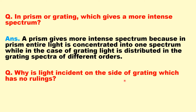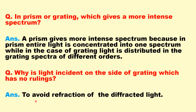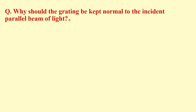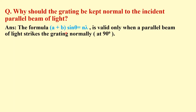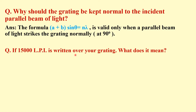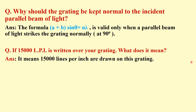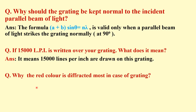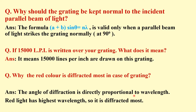Why is light incident on the side of the grating that has no ruling? It is to avoid refraction of the diffracted light. Why is the grating kept normal to the incident parallel beam? Because this formula is valid only when a parallel beam of light strikes the grating normally (at 90°). If 15,000 lpi is written on the grating, it means there are 15,000 lines per inch. Red color is diffracted most because the angle of diffraction is directly proportional to wavelength, and red has the highest wavelength.